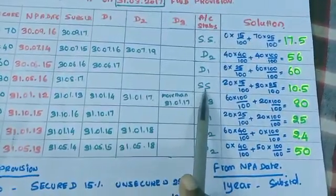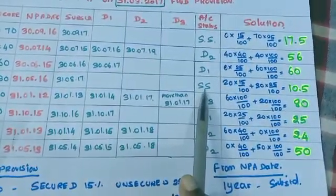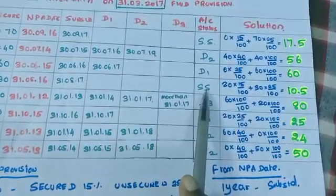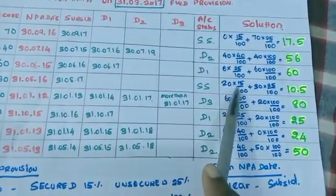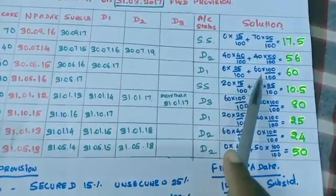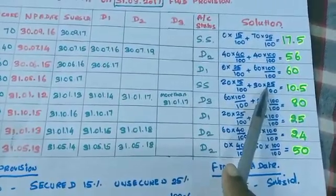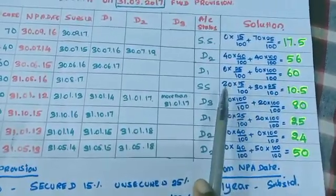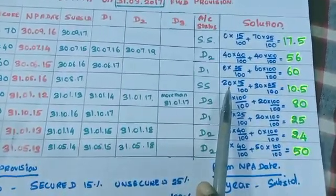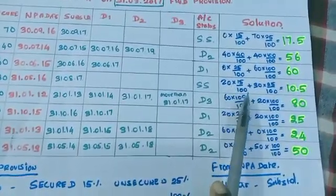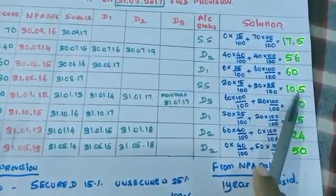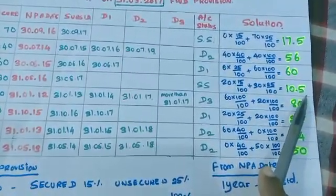A4 falls under substandard category. The provisioning norms for substandard are: secured portion 15% and unsecured portion 25%. In this problem, our secured portion is 20 and unsecured is 30. So 20 × 15/100 plus 30 × 25/100 equals 10.5.